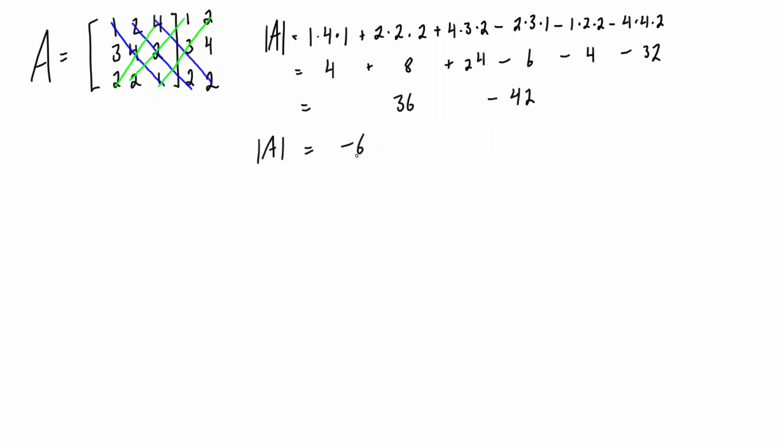I think that way is a lot faster than doing the full cofactor expansion. You basically actually get the same expression, but just by writing the first two columns and then identifying the three diagonals each way that each have three elements—blue one's positive, green one's negative—you can just hammer these things out super fast for three by three matrices.